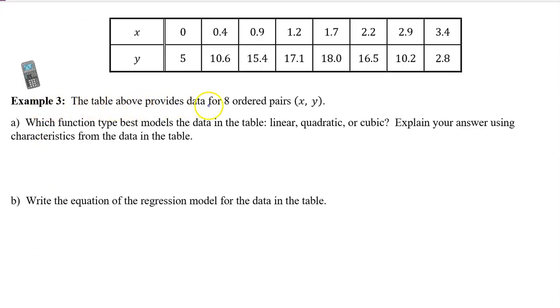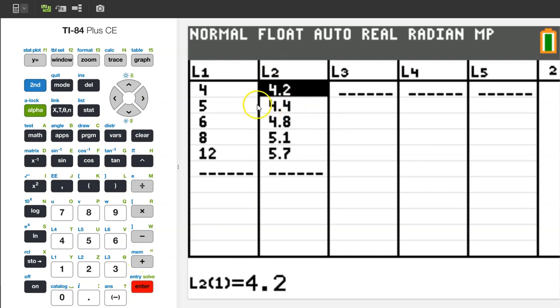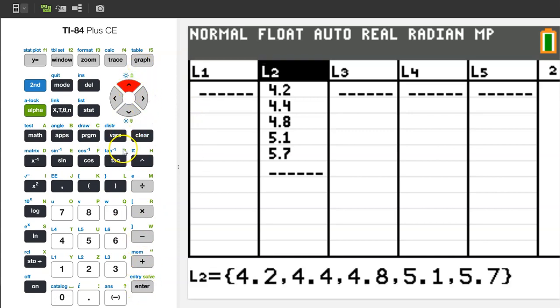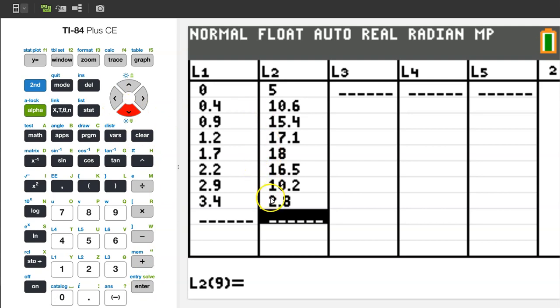Example 3. The table above provides data for 8 ordered pairs, x and y. Part A. Which function type best models the data in the table? Linear, quadratic, or cubic? Explain your answer using characteristics from the data in the table. This problem is calculator active, so let's go ahead and type in the data into the calculator. Remember, we can hit STAT and ENTER to edit the data list. If you already have something typed in there, go ahead and highlight the title, and hit CLEAR, and then ENTER. Go over to L2, and we can hit CLEAR, ENTER. Now, type in the new data.